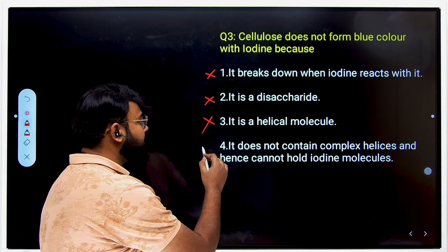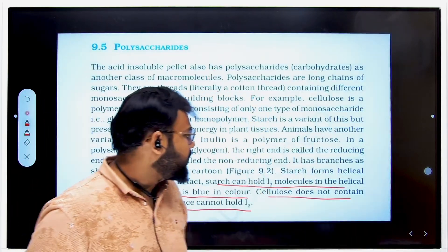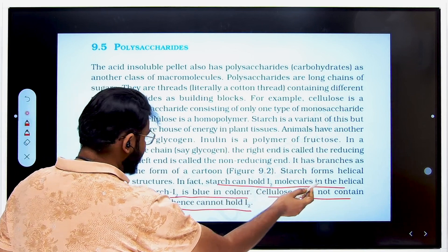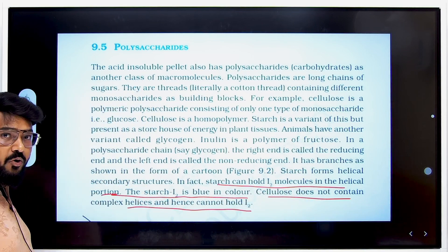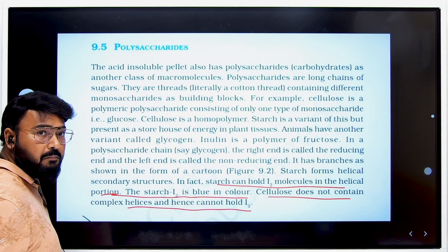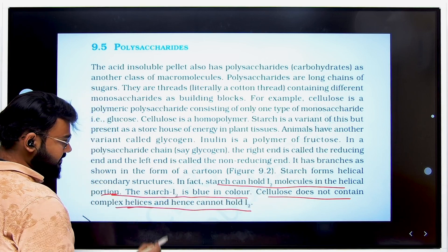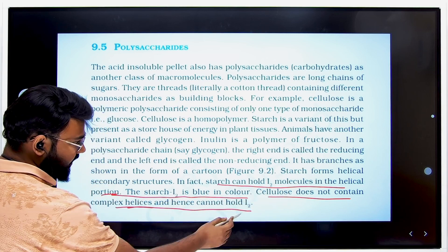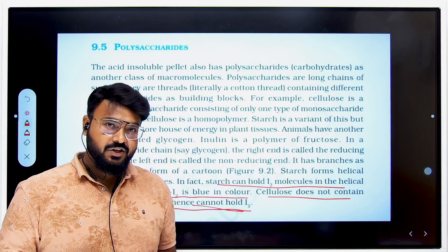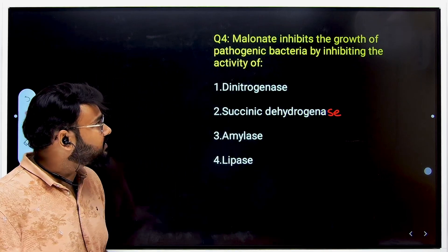The NCRT clearly mentions that starch can hold iodine molecules because it has a helical portion, and iodine appears blue because of that interaction. Cellulose, however, does not contain helices and cannot hold iodine — that is why there is no blue color produced.